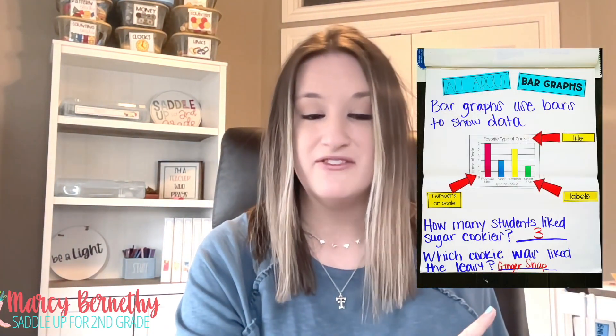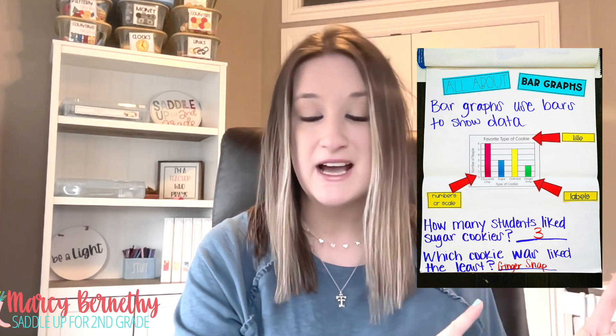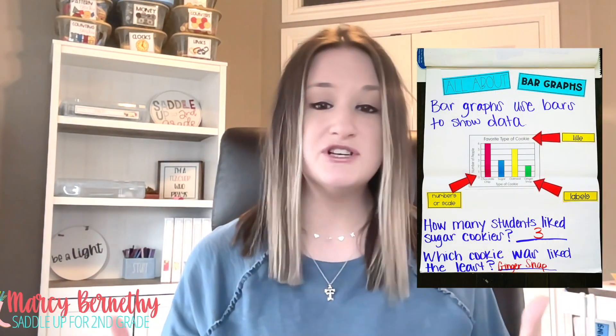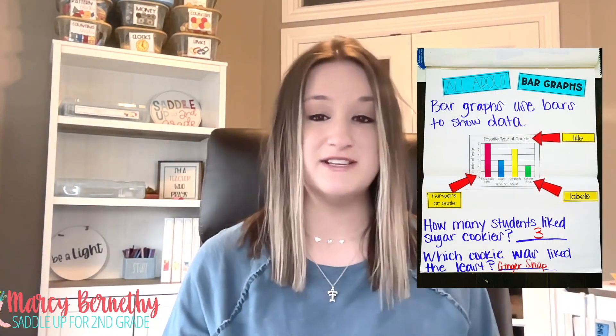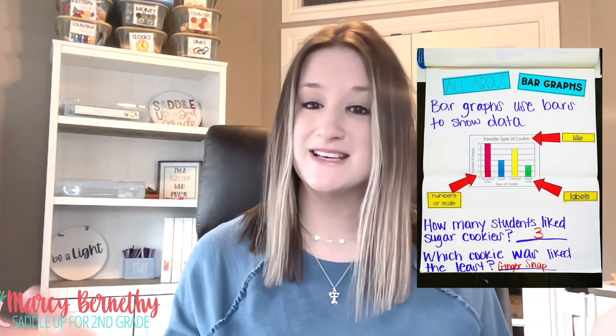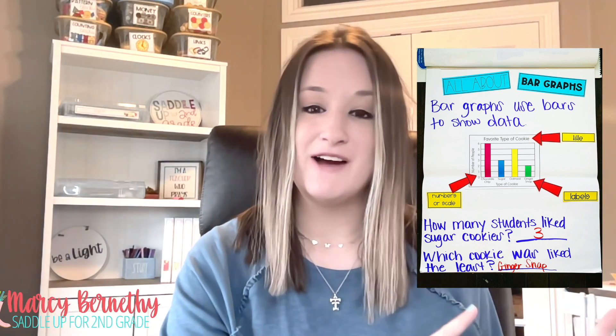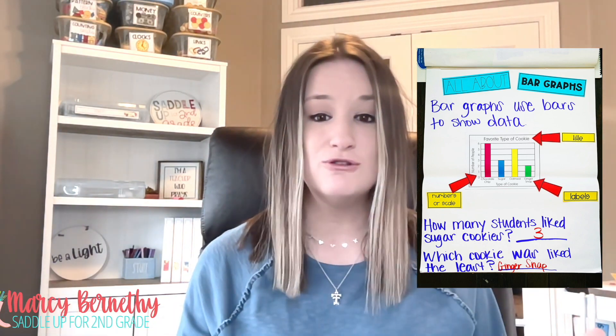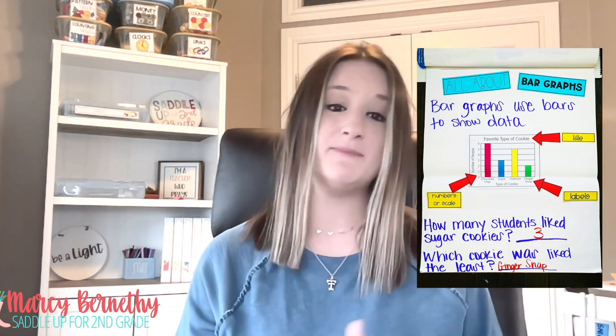I always use an anchor chart to teach the key parts of a bar graph, and we review and discuss these different vocabulary words. First we talk about the title. This is a brief description of the data that's being represented on the graph. The title should be short, clear, and to the point. Then we have the scale. The scale on a bar graph shows a set of numbers to help measure data and shows the way that numbers are used when representing different types of data.